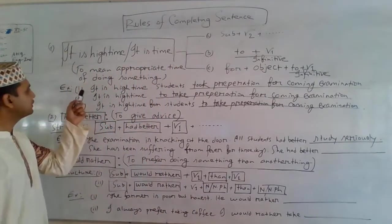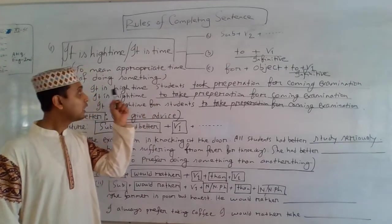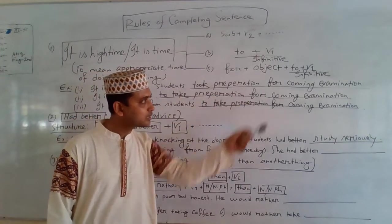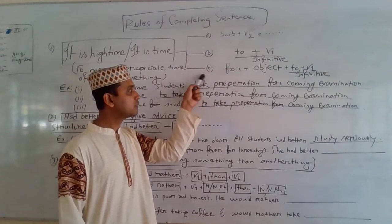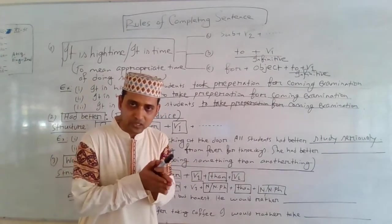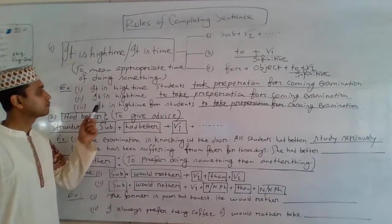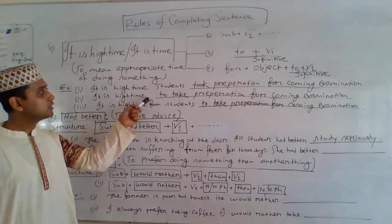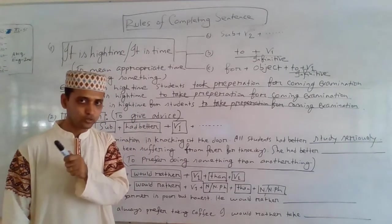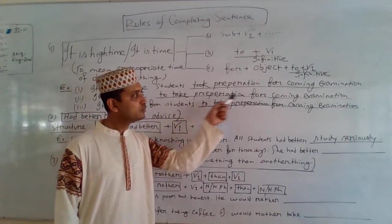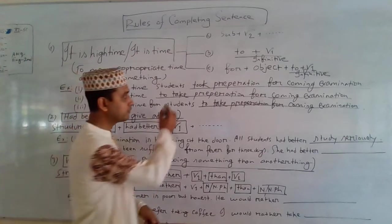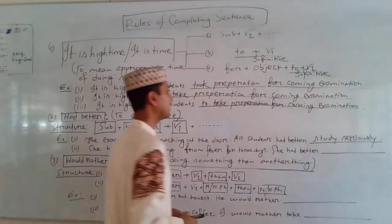Students, first example: 'It is high time students took preparation for coming examination.' After 'high time,' we get the subject 'students,' and then we used V2 'took preparation for coming examination.' The sentence has been completed. Second example: 'It is high time to take preparation for coming examination.' Here there is no subject after 'high time,' so we use the infinitive — to + V1 — 'to take preparation for coming examination.'